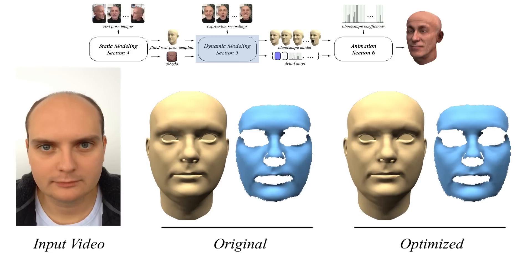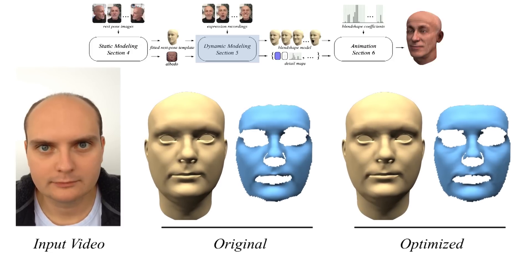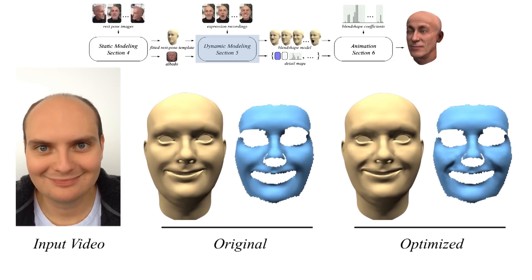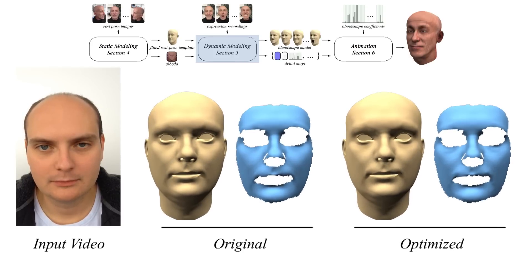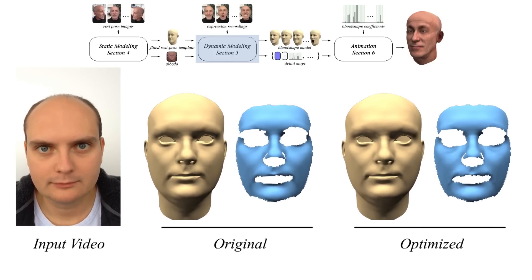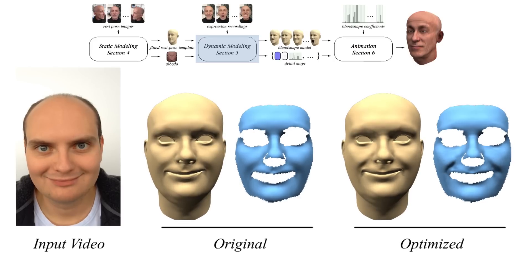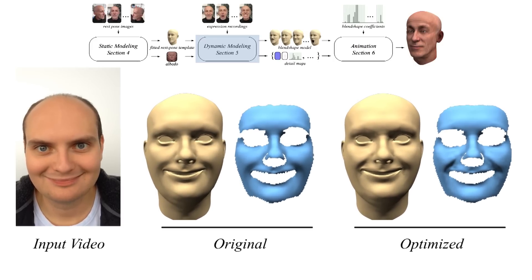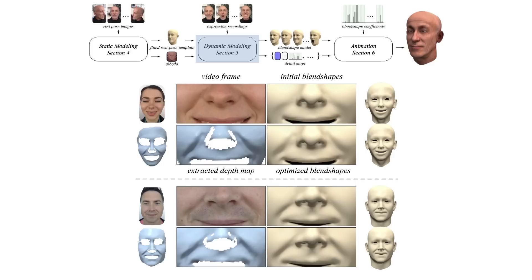We further improve the accuracy of the blend shapes using a 3D refinement step. We extract one depth map per frame using a photometric approach, and non-rigid registration is used to refine the blend shapes. This way, subtle details such as the bending of the cheeks are adapted to the actor.